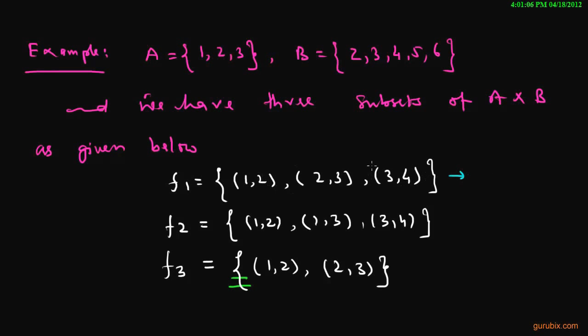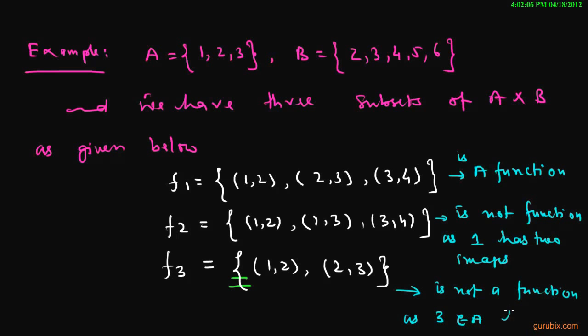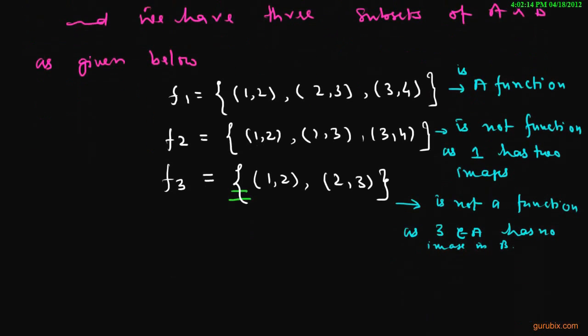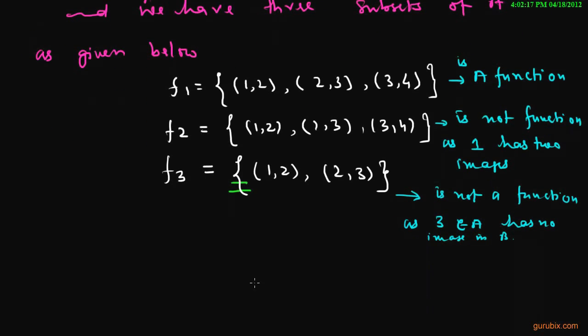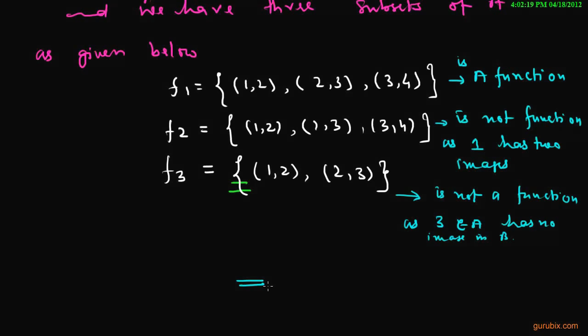This subset of A cross B, F1, is a function but F2 is not a function as 1 has 2 images and F3 is also not a function as 3 belongs to A but has no image in B. So this is the motive of this definition. Thank you.